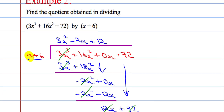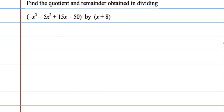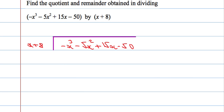The quotient is the result from doing the division. This time, I'm asked to find a quotient and the remainder. Set it up just like before: x plus 8 dividing into negative x cubed minus 5x squared plus 15x minus 50. Just worry about this value here, dividing in each time.